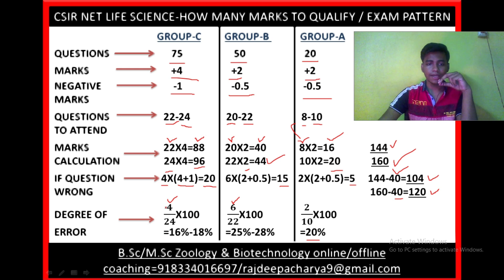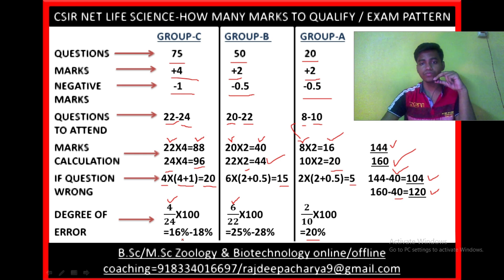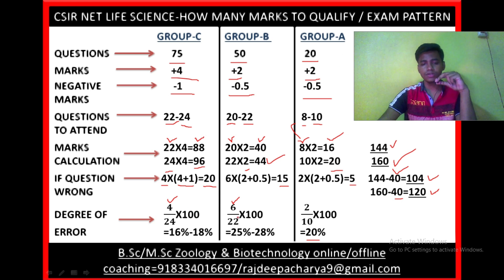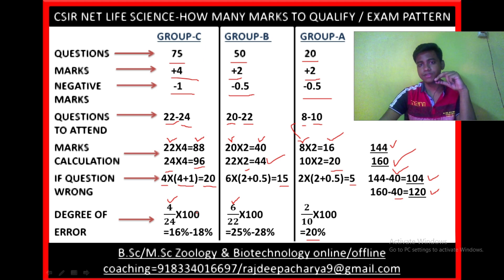However, if you attempt 5 wrong answers among 24 questions from Group C, the degree of error increases to 20 to 26 percent, which pushes beyond the acceptable threshold. If you do 5 wrong from Group C along with 6 wrong from Group B and 2 wrong from Group A, there will be no probability for you to qualify CSIR Net. So before attending any question and selecting any answer, you have to think very carefully about which questions you can answer correctly.